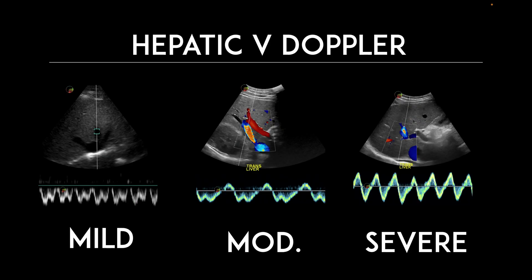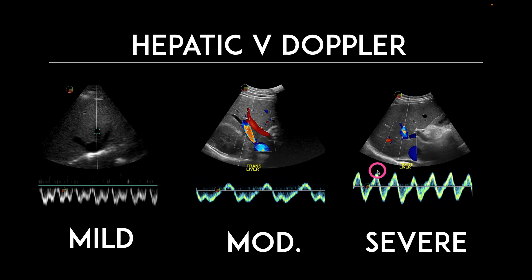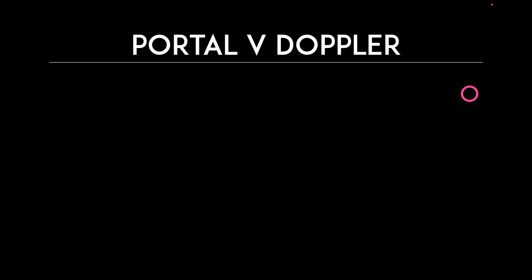We're going to place our pulse wave Doppler on that hepatic vein. It's a good idea to use color Doppler first to see which one is giving you the best signal, and then maneuver your pulse wave Doppler gate to be in the middle of that hepatic vein. In the mild category, we have an S wave and a D wave where the S wave has higher amplitude than the D wave. This is actually normal, but we say mild because the IVC is already distended. When you have the D wave at a higher or equal amplitude to the S wave, that's moderate. And when you start to see a sinusoidal pattern, that's when it's considered severe congestion.